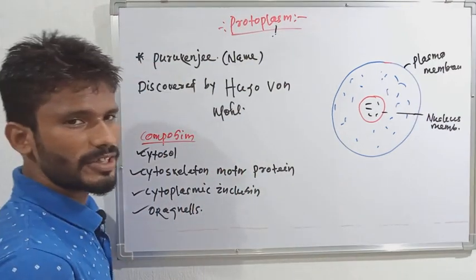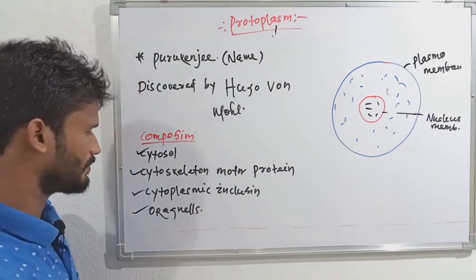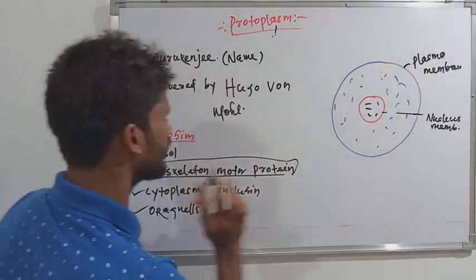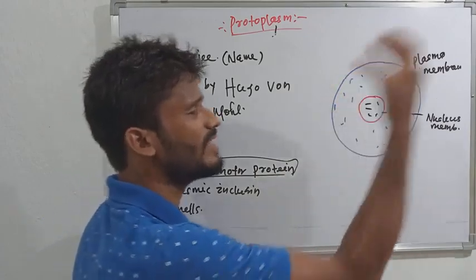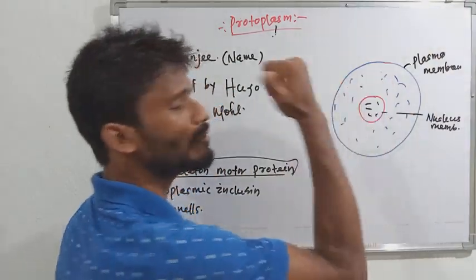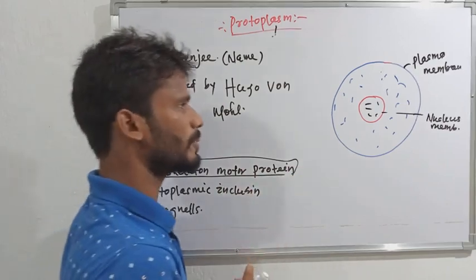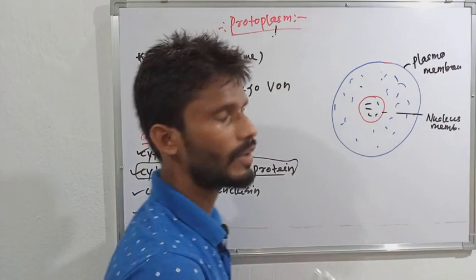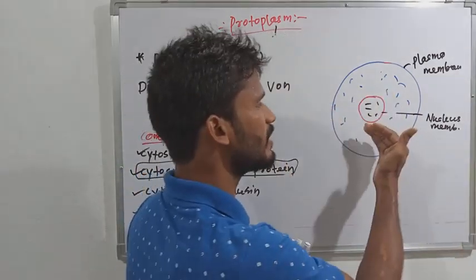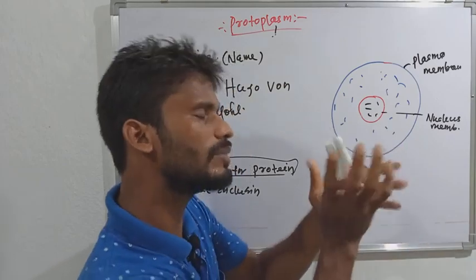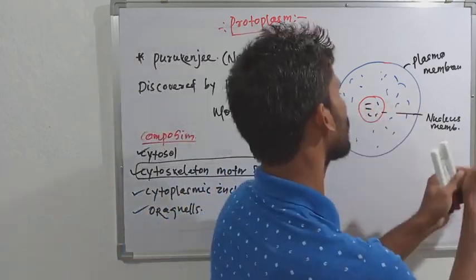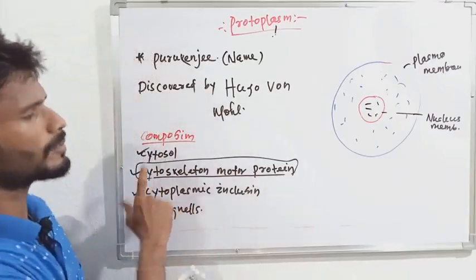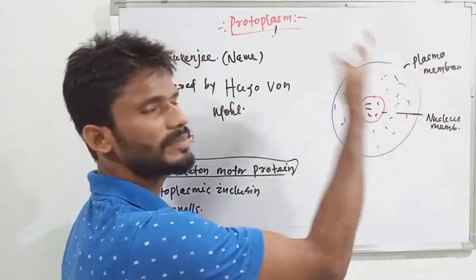The cytoskeletal motor proteins provide the cell its shape and size. Regarding cytoplasm: if you consider only the cytoplasm, it is the liquid excluding the nucleus membrane — the fluid outside the nucleus membrane.